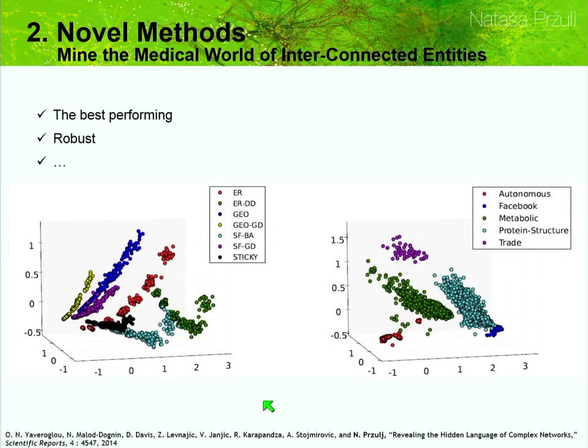This is thus far the best-performing measure to cluster networks — both on synthetic data and real data. This is a three-dimensional embedding of various real-world networks based on this distance: all metabolic networks cluster together, protein structure networks cluster together, Facebook networks of 100 American universities are here, computer networks, world trade networks over different years, and so forth.